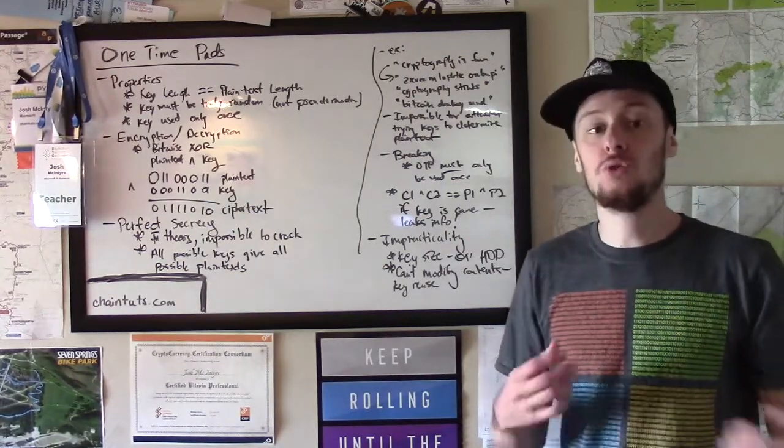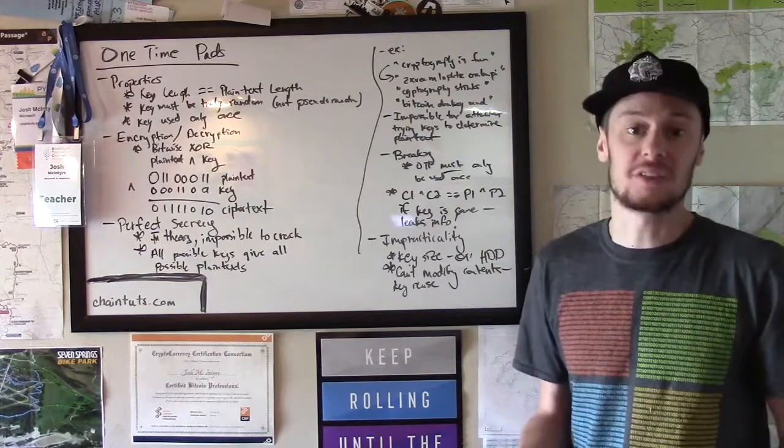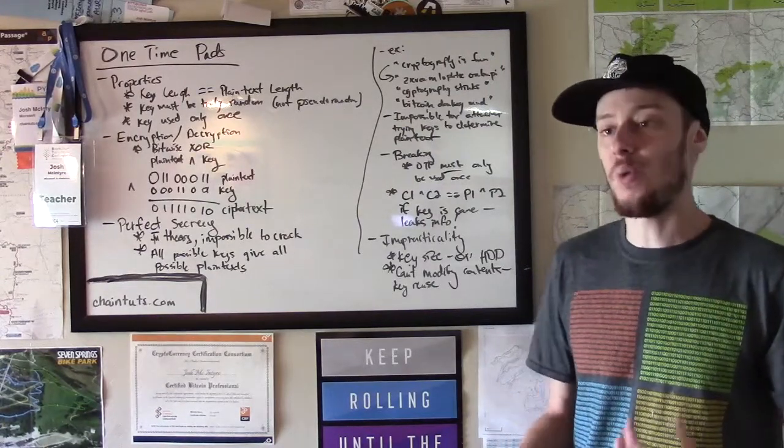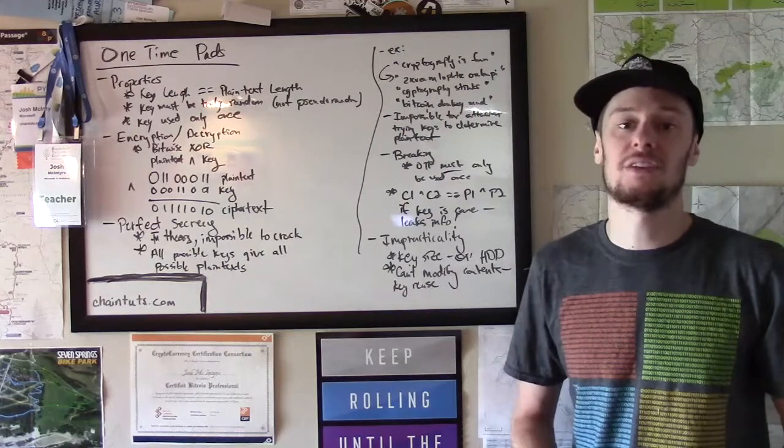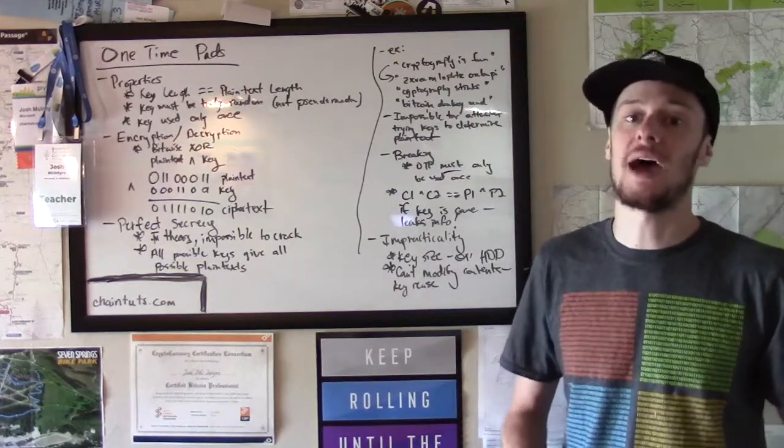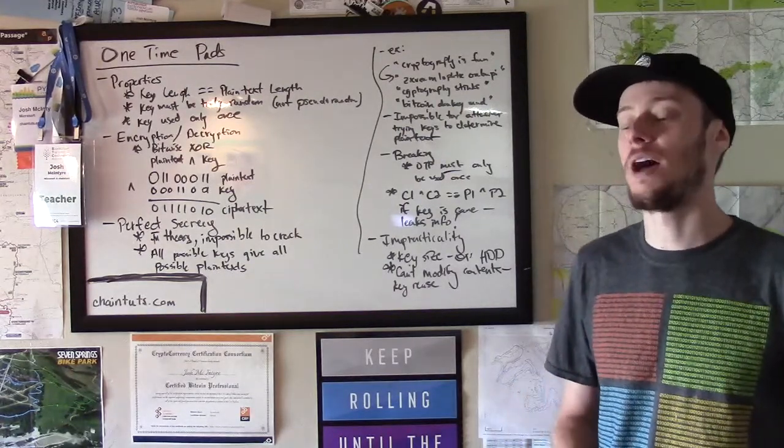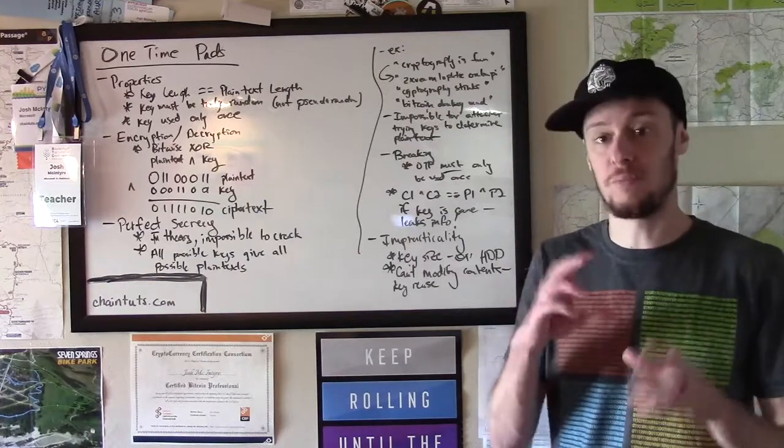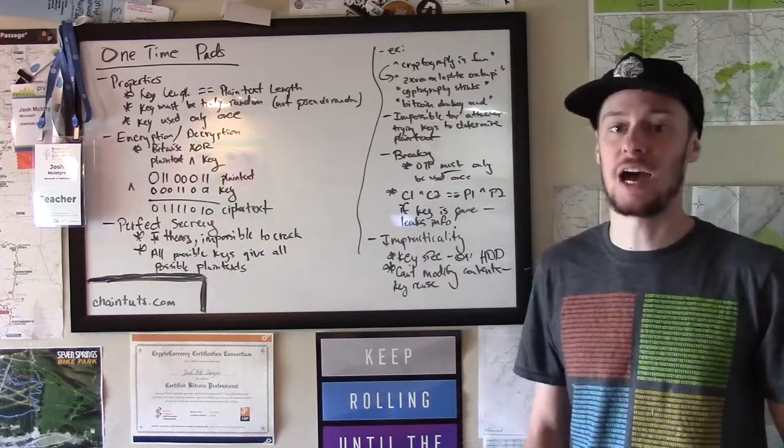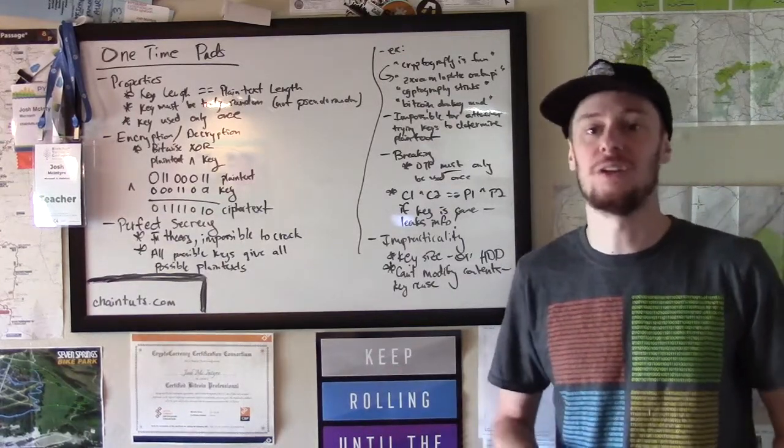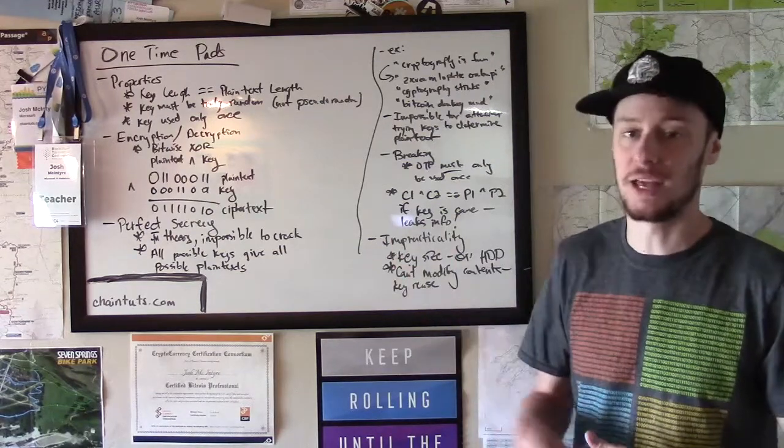So you lose that property of perfect secrecy in a way that's pretty profound. One of the best ways to see an example of this is to look up breaking one-time pad key reuse. And people have done this with bitmap images that kind of show how it leaks information about both of the plaintexts.